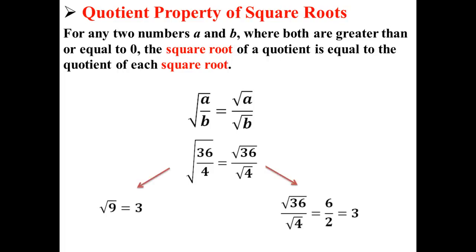Now let's check this. On the left, 36 divided by 4 is 9, so the square root of 9 is equal to 3.